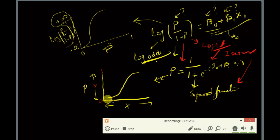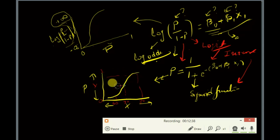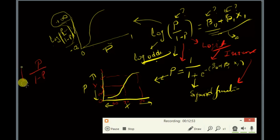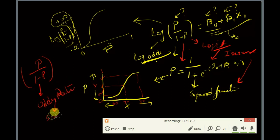So if we have observations — for example wind speeds of 60, 70, or 80 — we can plot them and determine the probability of rain for each observation. One more note: the odds ratio p divided by 1 minus p is essentially success per failure.